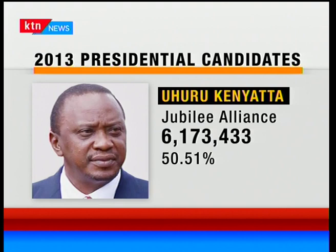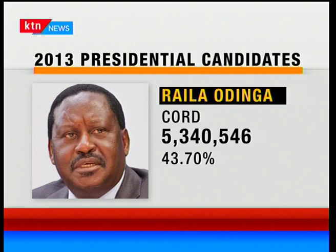Moving to the parties at play this time: the Jubilee Alliance is now the Jubilee Party, CORD is now NASA. We also have the Tunza Coalition from Abdu Dida, who had Alliance for Real Change but has changed party names. There's also new entrant Ekuru Aukot with the Third Way Alliance. In 2017, there were many independent candidates — totaling about 18 — but after clearing by the IEBC, eight candidates remain, including three independents.